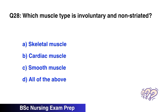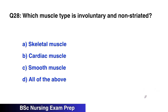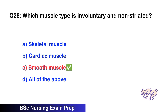Question number 28: Which muscle type is involuntary and non-striated? The right option is C, smooth muscle.